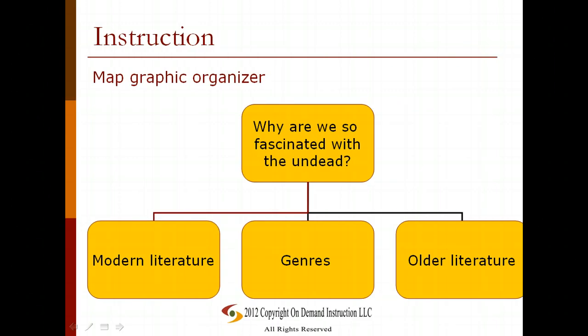You can use other kinds of graphic organizers too. Here's the basic idea of how a map graphic organizer would look. This one is not necessarily a completed graphic organizer, but it's meant to get you started with the general idea. Here we have our topic — 'Why are we so fascinated with the undead?' — and then our three subtopics: modern literature, genres, and older literature. Under each of these we could put additional information.